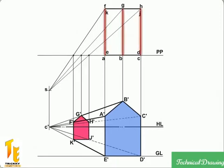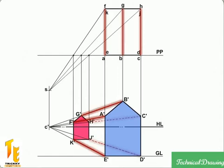As the lines AF, BG, CH, DJ, and EK are perpendicular to the picture plane, their perspectives A', F', B', G', etc. converge to the center of vision C' on HL.